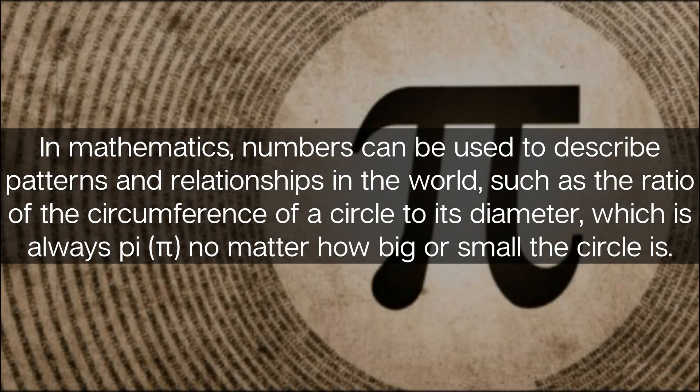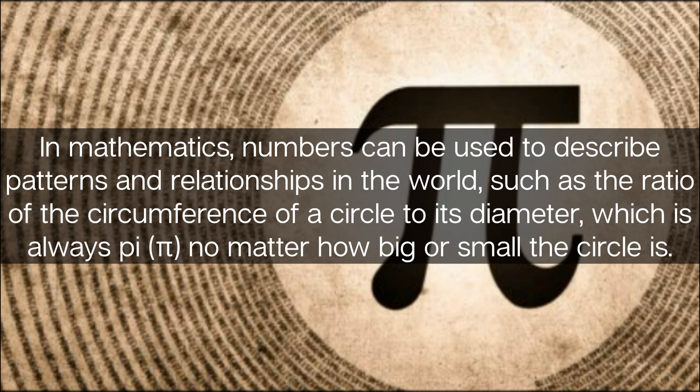Numbers in mathematics can be used to describe patterns and relationships in the world, such as the ratio of the circumference of a circle to its diameter, which is always pi, no matter how big or small the circle is.